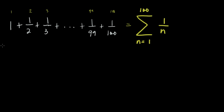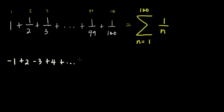Let's have another one. For instance, you want to write negative 1 plus 2 minus 3 plus 4, and so on, up to plus 24 minus 25.